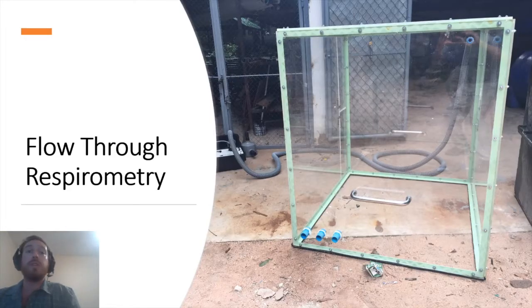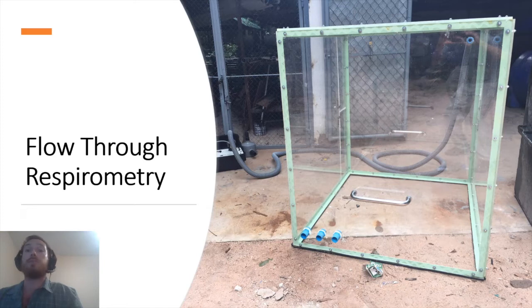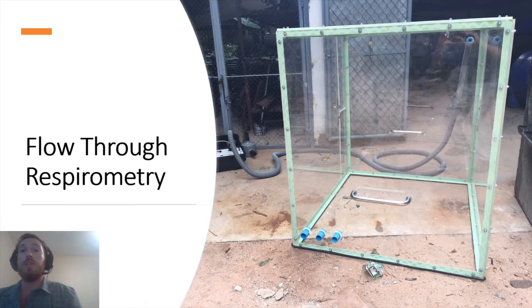I measure resting metabolic rate using flow-through respirometry. We built a plexiglass chamber that is completely sealed, except for three ports at the bottom for air to enter and one port at the top for air to leave. Each bear is placed inside for between 30 to 45 minutes, and while it is resting, I measure the amount of oxygen it is consuming and the amount of carbon dioxide it is producing. This allows me to calculate how much energy they are using throughout that time period.